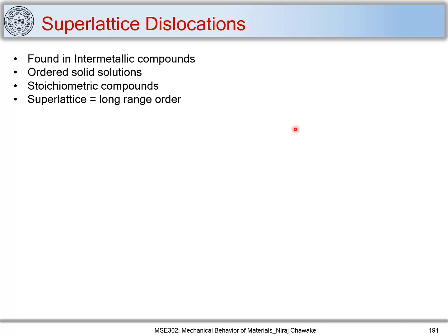In the last part, we have seen how dislocation reactions take place and how they form locks — we call them Lomer-Cottrell locks. Now, we are talking about crystal structures and dislocations.